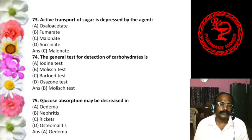Question 43: Homopolysaccharide used for intravenous infusion as plasma substitute is — Agar, Inulin, Pectin, or Starch. The answer is agar, used for intravenous infusion. Question 44: The polysaccharide used in assessing the glomerular filtration rate (GFR) is — Glycogen, Agar, Inulin, or Hyaluronic acid. The answer is C, inulin.